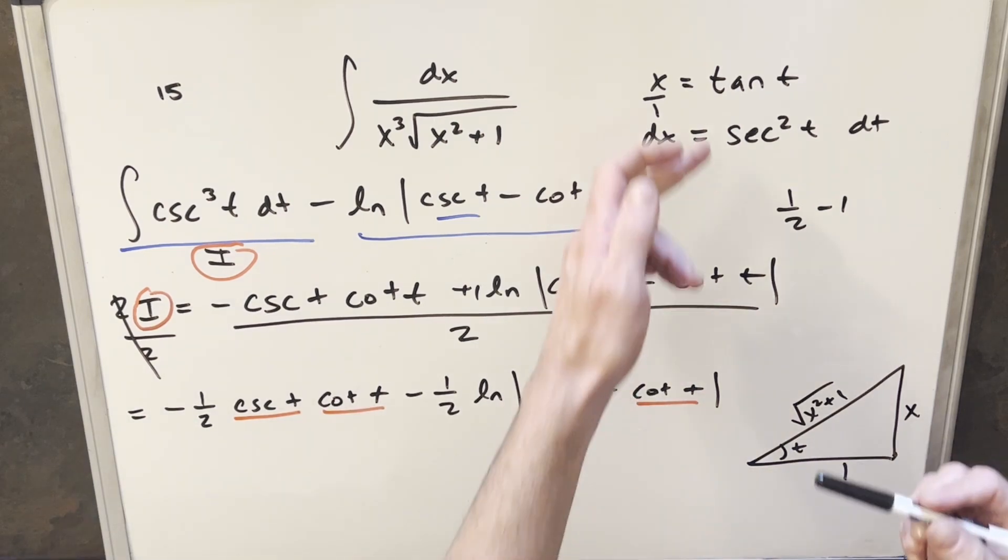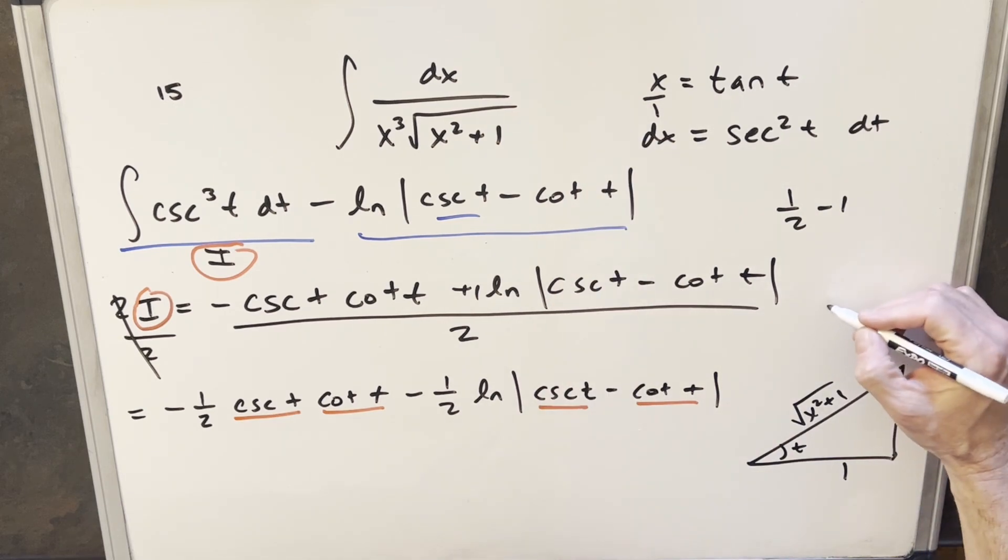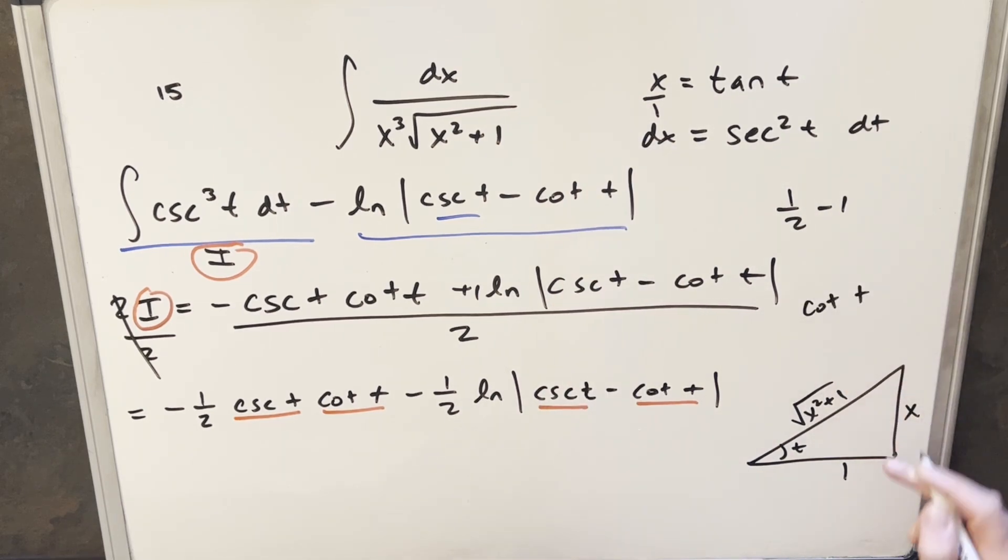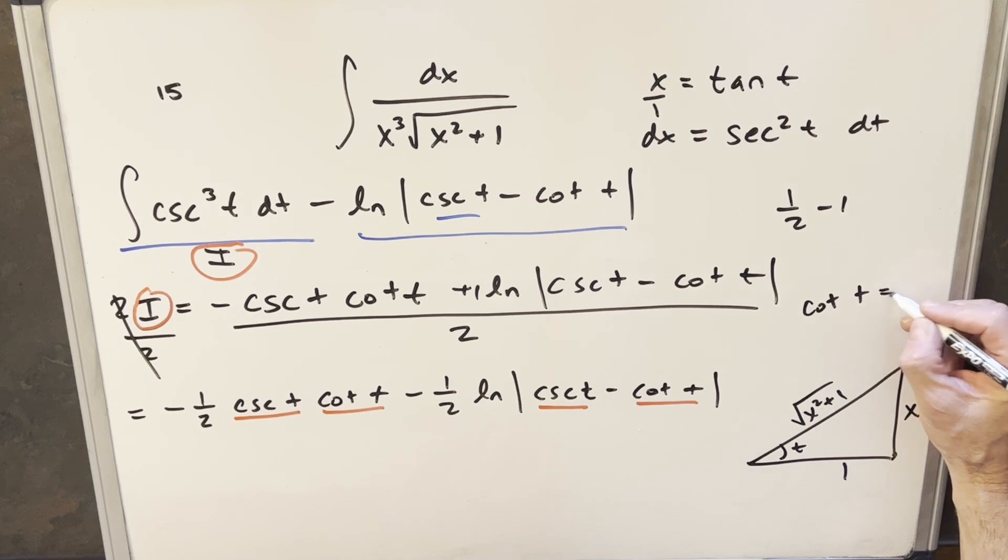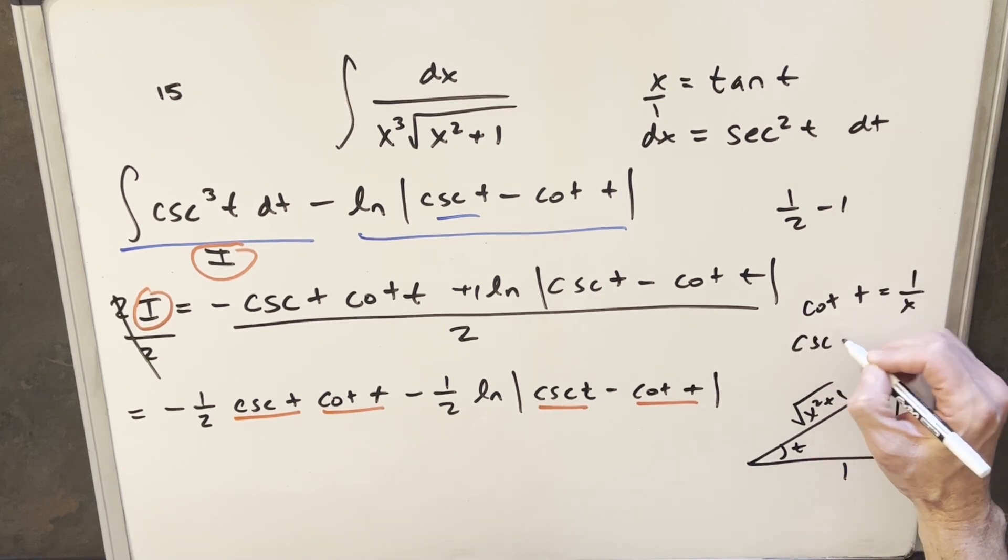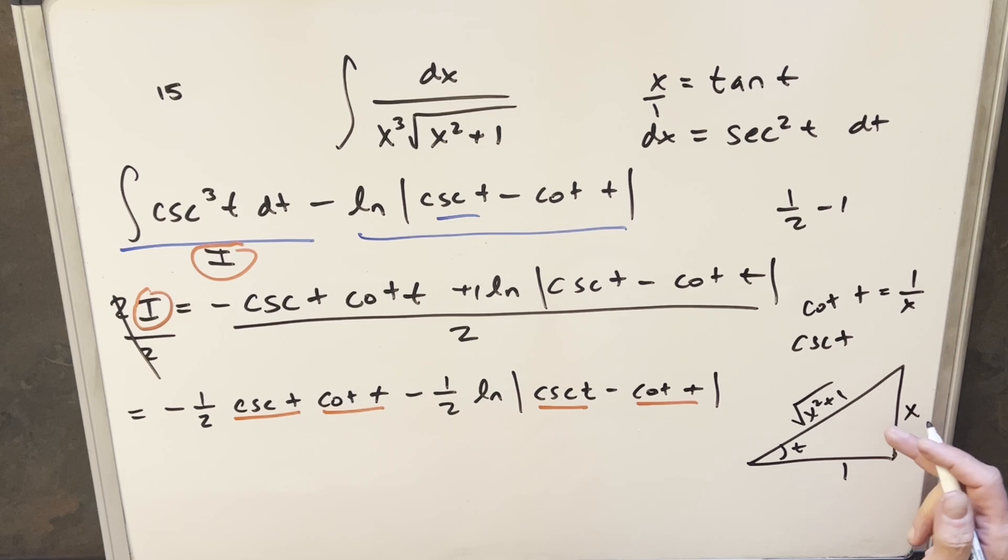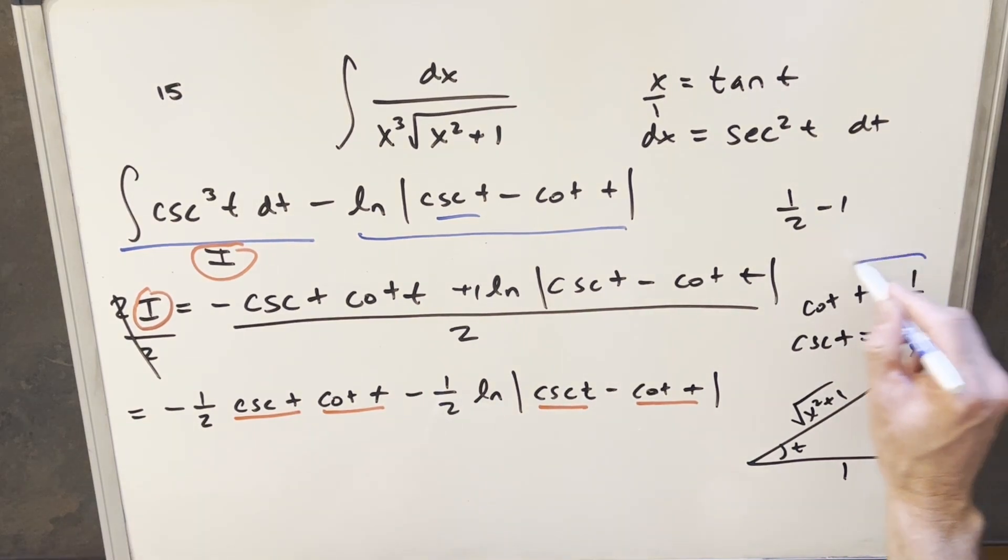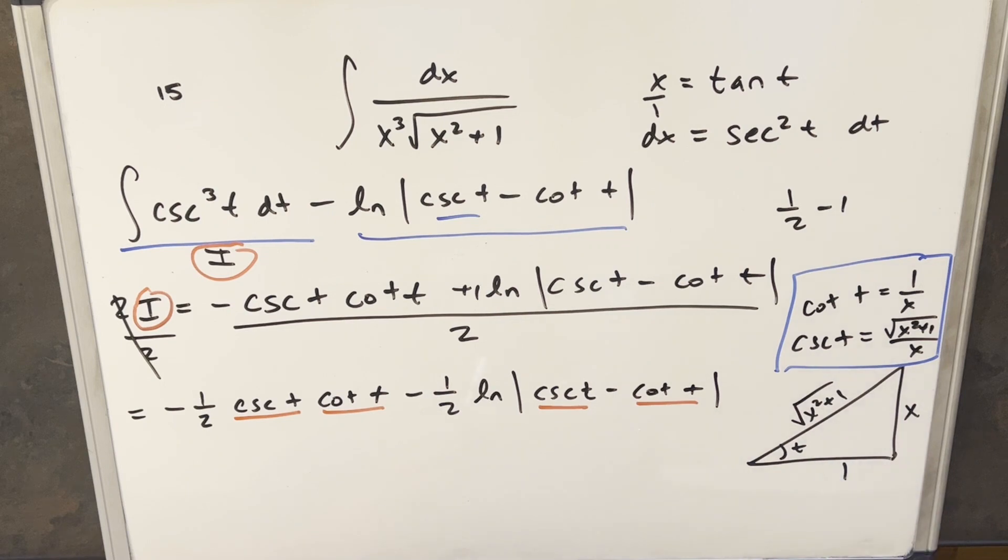And you'll notice all we really need is we need cosecant of t and cotangent of t. So for cotangent of t, that's just going to be the reciprocal of this. We really didn't need a triangle for that, right? Because for cotangent of t, it's just adjacent over opposite or 1 over x. And then cosecant of t is going to be hypotenuse over opposite. So it's going to be square root of x squared plus 1 over x. And so now we have all the values we need right here in order to finish this thing off.